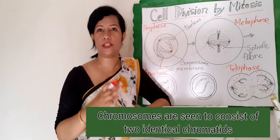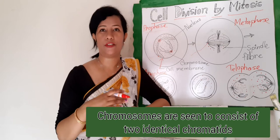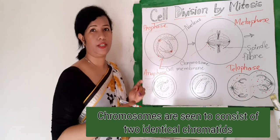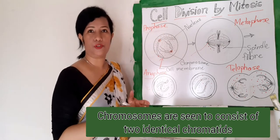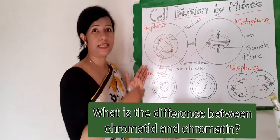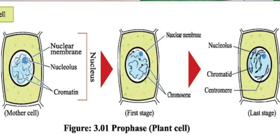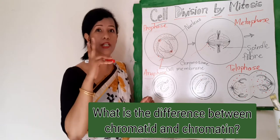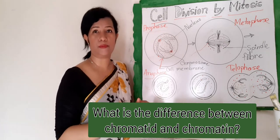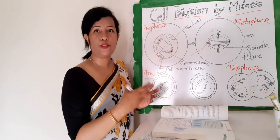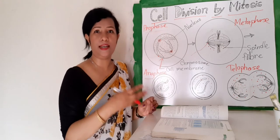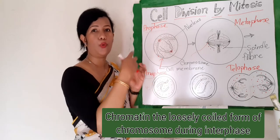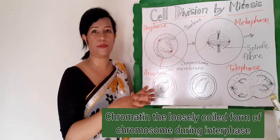Chromosomes are seen to consist of two identical chromatids. Each chromatid contains one DNA molecule. Chromatids are the two identical parts of a chromosome, held together by the centromere, formed during interphase by the replication of the DNA strand.